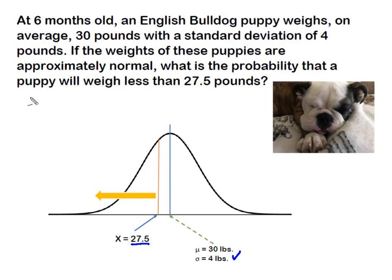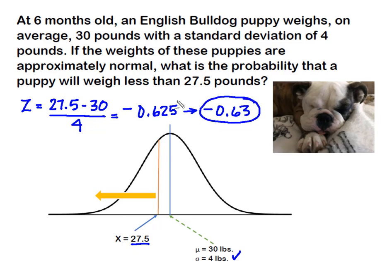So remember our first step is to calculate that z and we're going to do that by simply taking the 27 and a half pounds, our value of X, subtract it from the mean of 30 pounds and then divide by the standard deviation of 4 pounds. That's going to give us a z, a negative z of 0.625 and we're going to round that on up to a z of negative 0.63 and that negative 0.63 is what we're going to look for in our normal distribution chart.